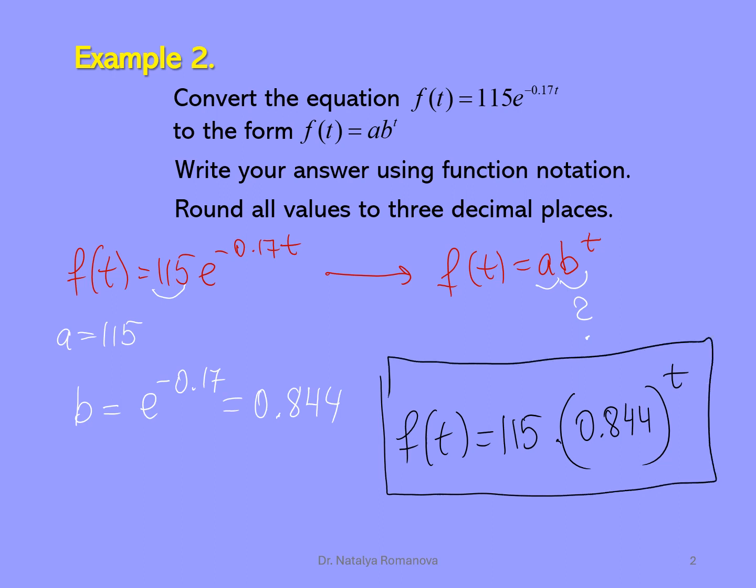We convert our given equation to the form f of t equals a times b to the power of t. You can see it is decay — exponential decay. Why? Because 0.844 is less than 1, so it is exponential decay form.